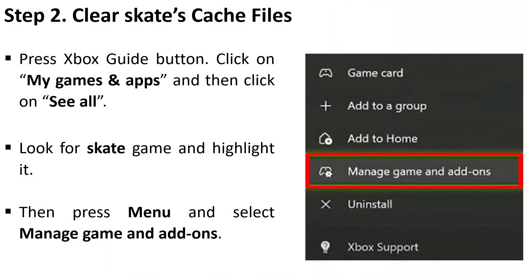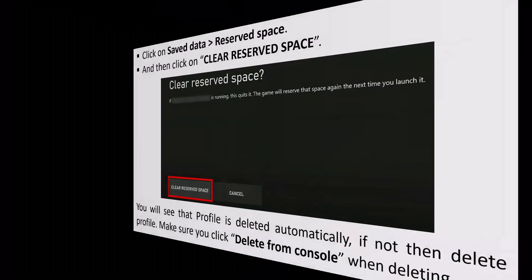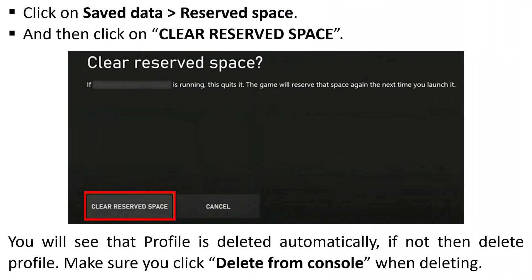Step 2: Clear Skate's cache files. Press the Xbox guide button, click on My Games and Apps, then click on See All. Look for the Skate game, highlight it, then press Menu and select Manage Game and Add-On. Click on Save Data Reserve Space, then click on Clear Reserve Space.